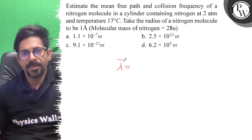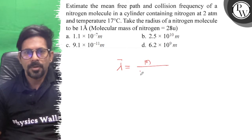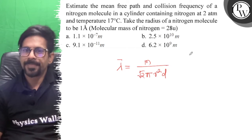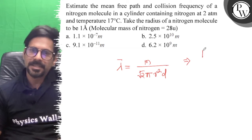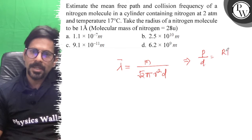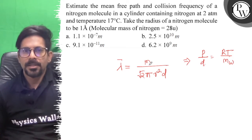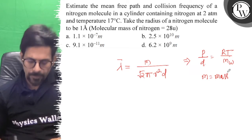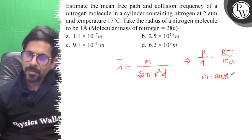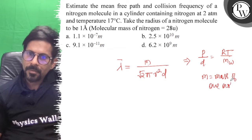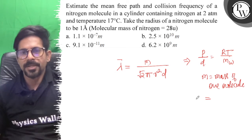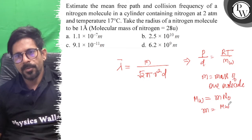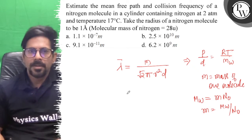The mean free path lambda equals m divided by root 2 pi into r squared into density. Density equals rho equals MW over RT into P. Here m is the mass of one molecule, and we know that MW equals small m into N0, so mass of one molecule equals MW upon N0.